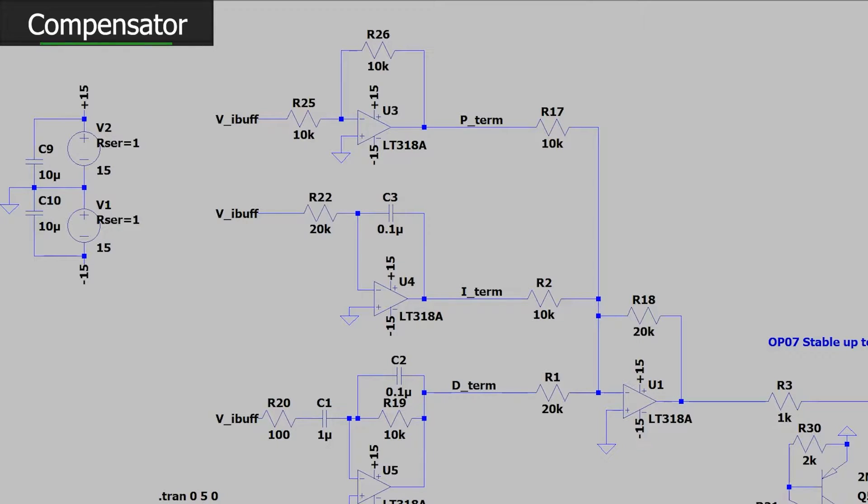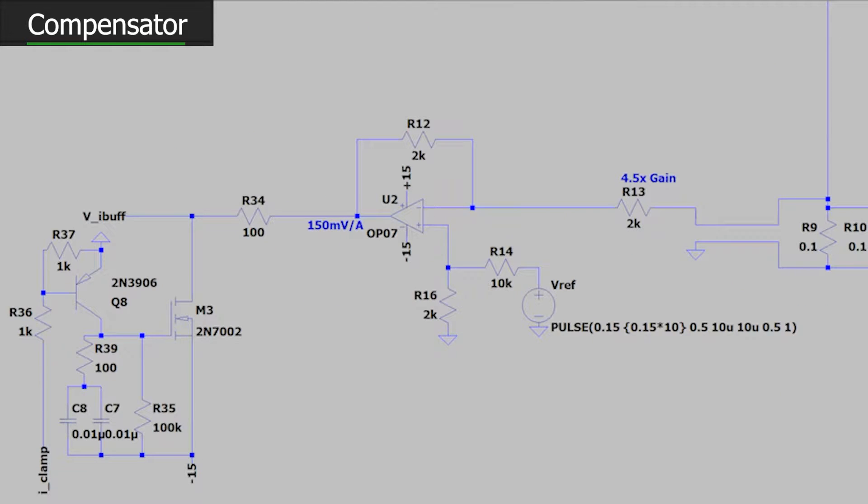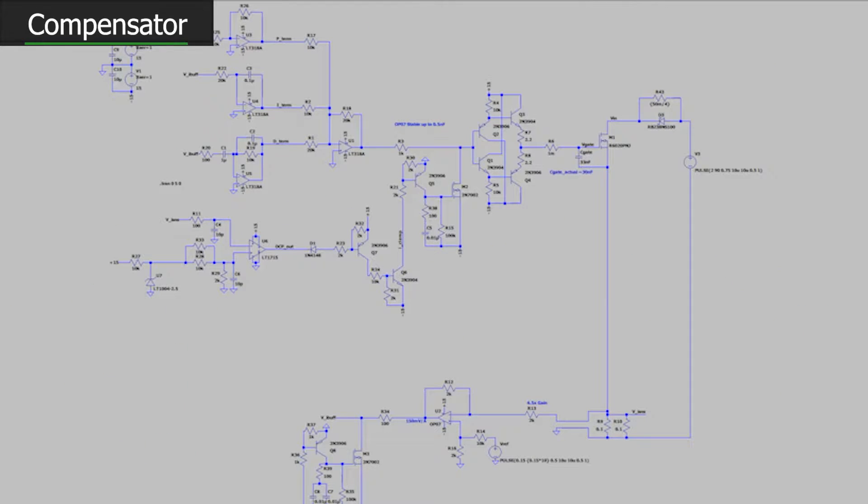What that allows us to do is get rid of that extra gain stage on the D term, and simplify the integrator. It simplifies the differentiator and reduces the number of op amps required. What we see in this region of the screen is the OCP circuit, the overcurrent protection circuit. And down here, you see the voltage buffer with some of that other circuitry.